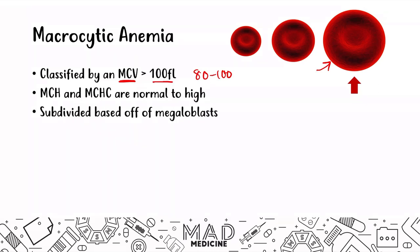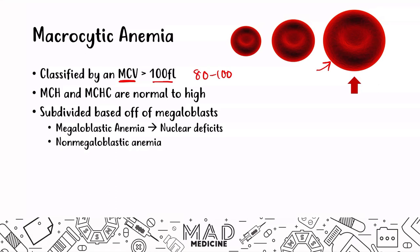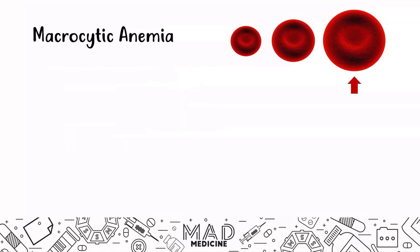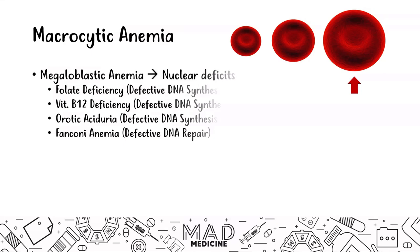Macrocytic anemias can be subdivided based on megaloblastic, which occurs due to nuclear deficits, and non-megaloblastic, which occurs not because of nuclear deficits but due to other reasons. When it comes to megaloblasts, you can have issues with DNA synthesis and DNA repair. If there's anything happening with the DNA involving nuclear deficits, you will see megaloblastic anemia.